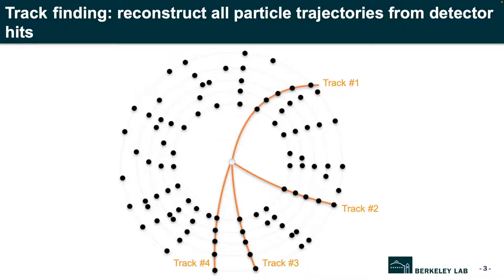Our detector actually doesn't know which particles these hits belong to. So what we need to do is find the right group of hits and say these hits are coming from the same particle. In other words, we want to assign a label to each hit, and ideally the hits coming from the same particle should share the same label.